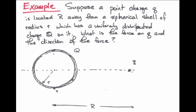Let us consider another example. Suppose a charge little q is located a distance capital R away from a spherical shell which has a uniformly distributed charge capital Q on it. What is the force on little q and the direction of this force? This situation is somewhat confusing because until now we have only considered point charges. Here we have a charge capital Q distributed uniformly over an entire shell.